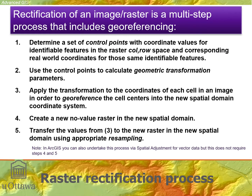Rectification of an image is a multi-step process. First, we have to determine a set of control points. Control points are things that you can see in a real-world coordinate system reference map — that could be street corners, fire hydrants — and you can also see them on the raster image, whether it's a satellite image or a thematic image. We record the coordinates of the thing, let's say it's a fire hydrant. We record those coordinates in the column and row coordinate system of the raster and where they are in the real world, and those four numbers represent a single control point.